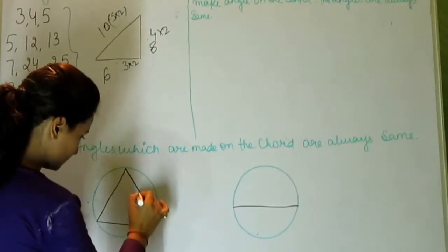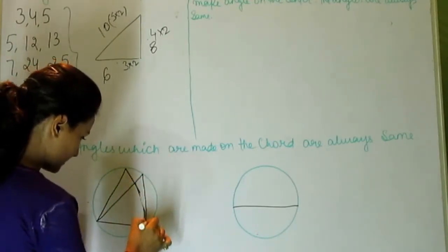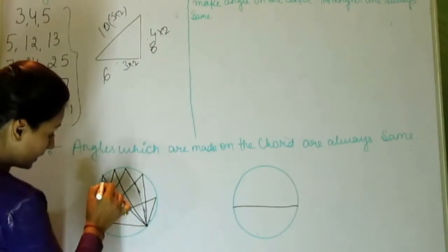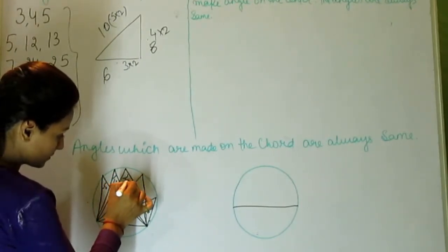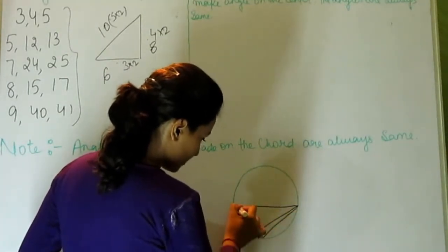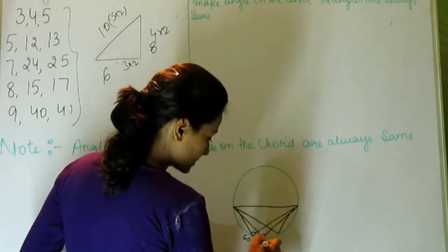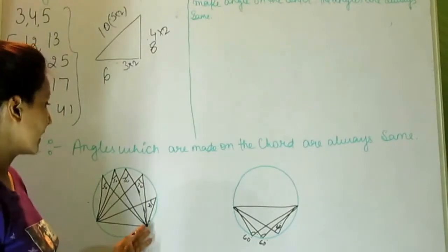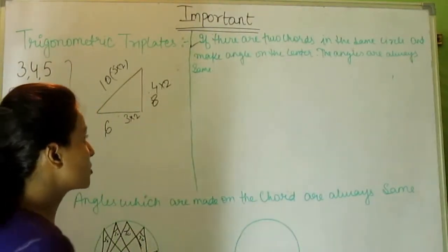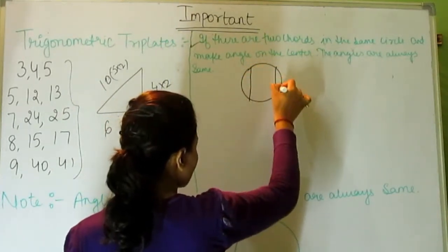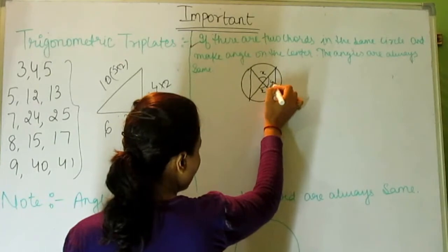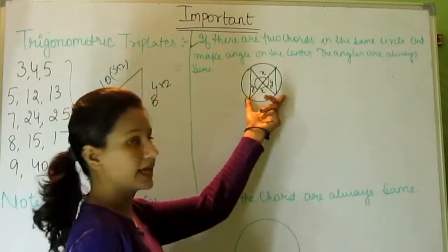If there are two parts in the same circle making angles on the same chord or arc — if one angle is x, then the other will also be x. And if one angle is y, then the other will also be y. All angles subtended by the same arc are equal.